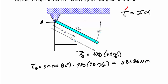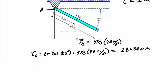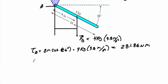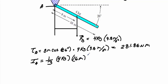Now I have the torque calculated. We'll calculate the moment of inertia. Since we're pivoting around this end point, we will use one-third times the mass times the length squared. So the moment of inertia about A equals one-third times 4 kilograms times 16 meters squared. That gives me a moment of inertia of 341.33 kilogram meters squared.